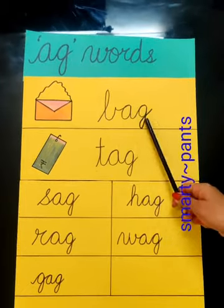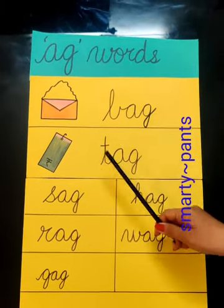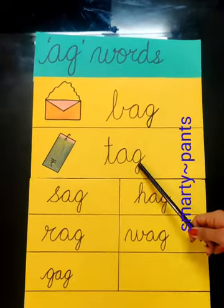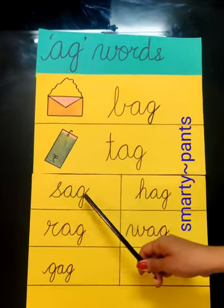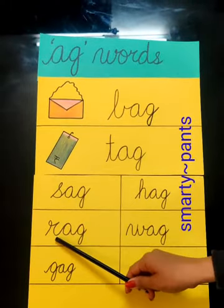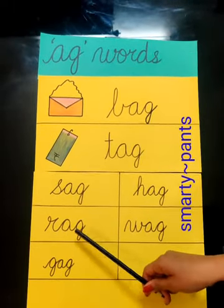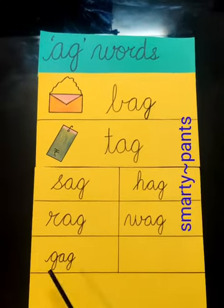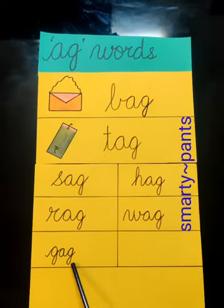'Ag' words. B, A, G — Bag. T, A, G — Tag. S, A, G — Sag. R, A, G — Rag. G, A, G — Gag.